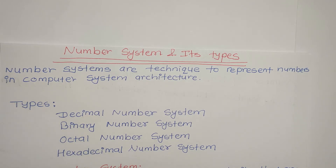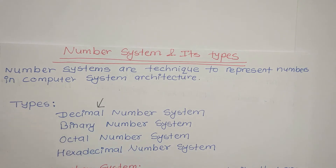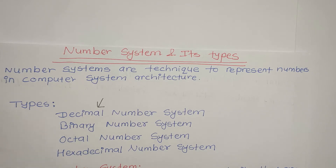We will use the number system in daily life. That number system is the decimal number system. In daily life, we use decimal numbers. But in case of computer system architecture, there are four types of number system.